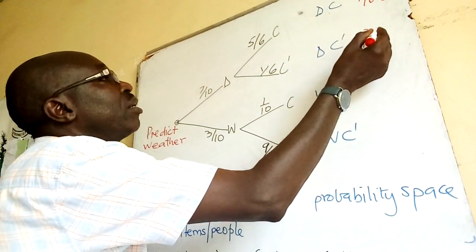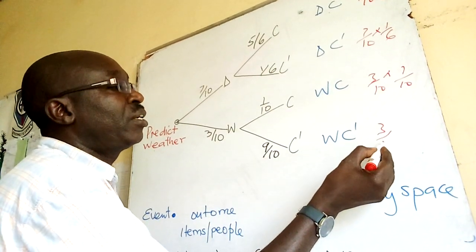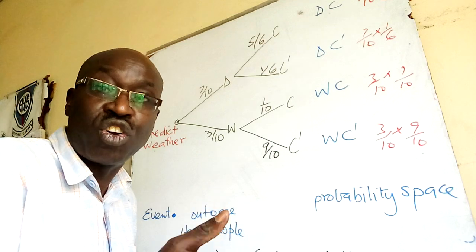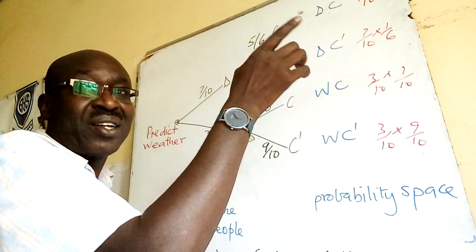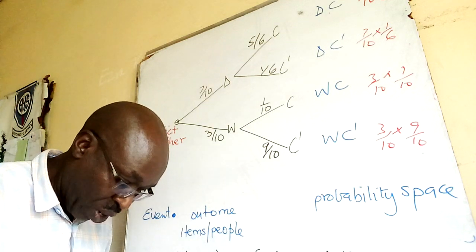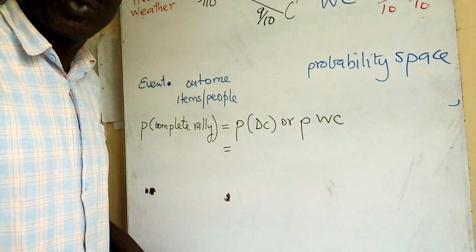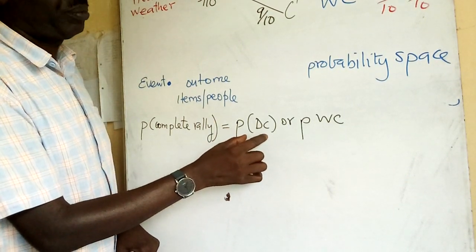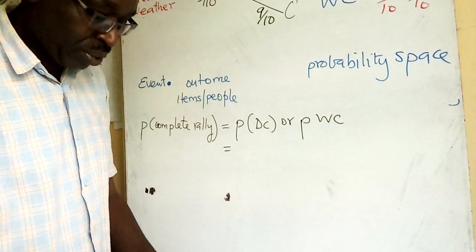The other branches are: 7 over 10 times 1 over 6, then 3 over 10 times 1 over 10, and 3 over 10 times 9 over 10. Remember, each line is a product because it is the condition of 'and' — D and C, that combination means we multiply. Now, the probability that the driver will complete the rally — it can come from the first branch or the third branch where we have 'complete'.